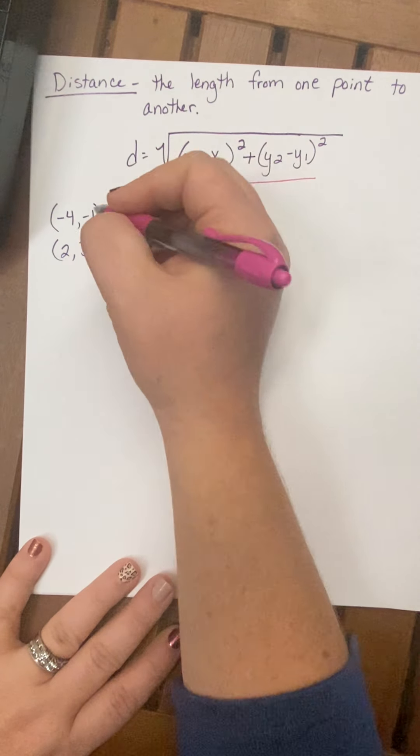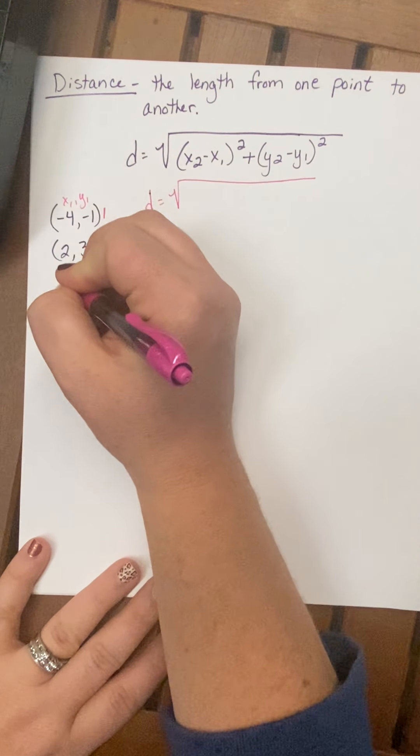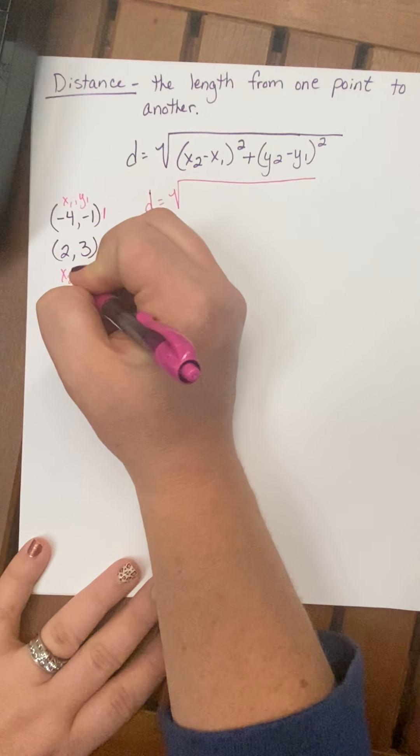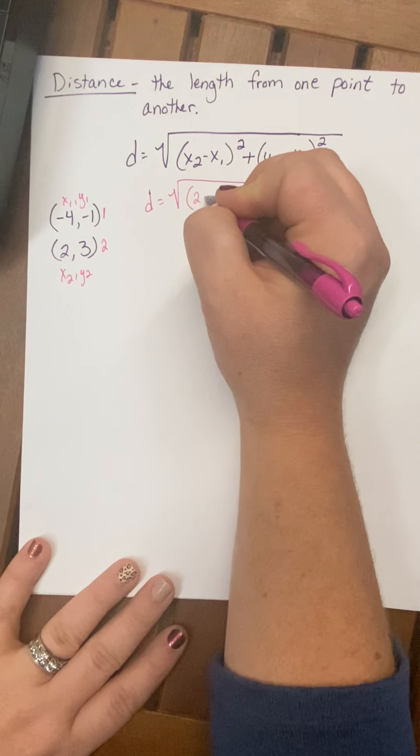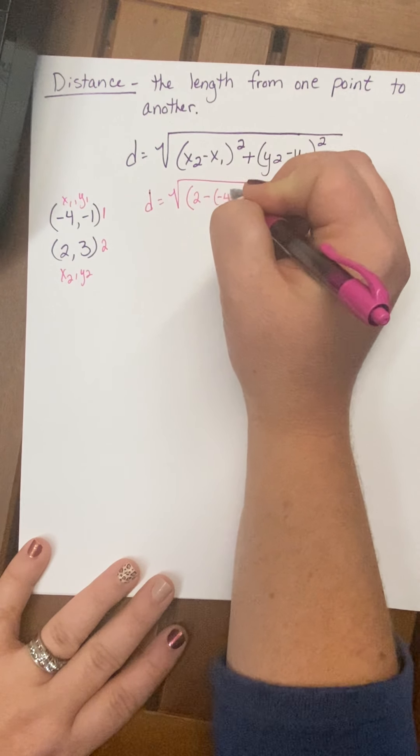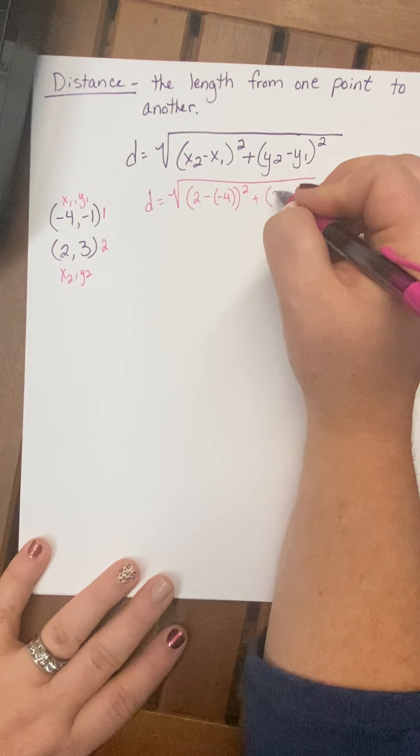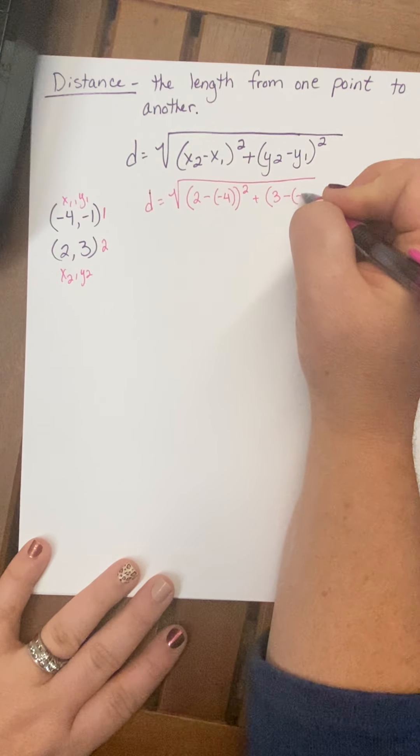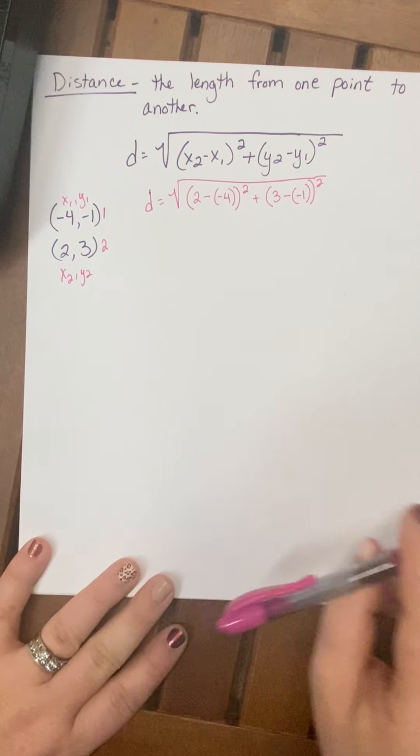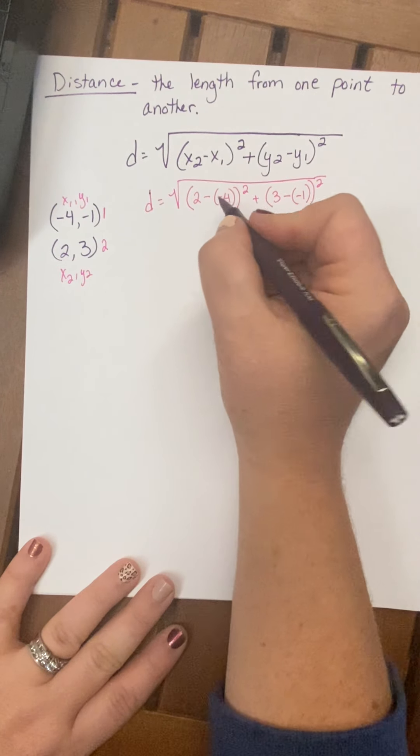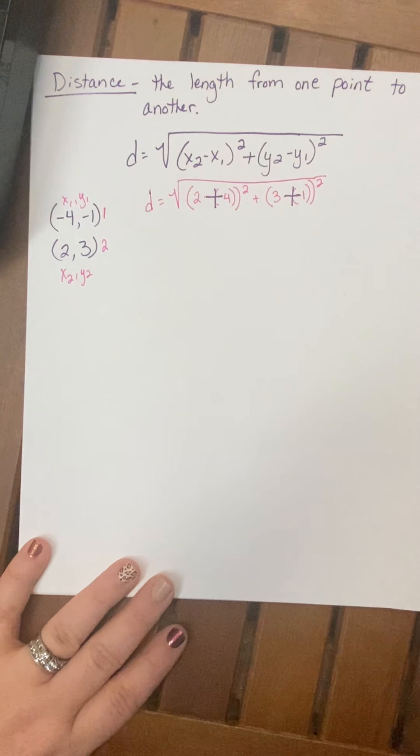All right, and I'm going to fill these in. I'm going to call this my point 1. This is my point 2. So this is x1, y1. This one is x2, y2. Okay, let me plug that in. x2 is 2. x1 is negative 4 squared plus y2 is 3 minus negative 1 squared. Okay. Now we know that a minus negative makes a plus. All right.